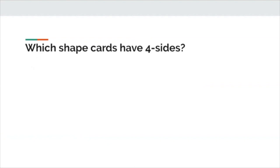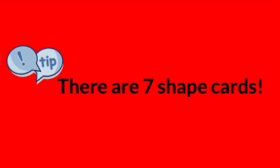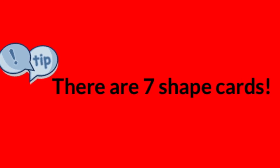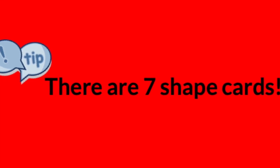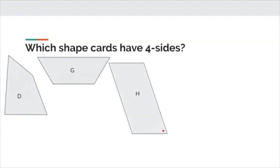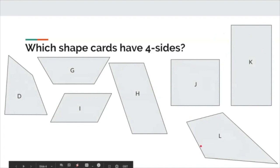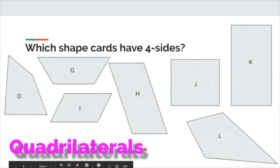Now I want you to take a look at the rest of the shape cards and pull out all the ones that have four sides. Press pause, then press play when you're ready. If you found shapes D, G, J, K, and L, those are all the four-sided shapes. In math we call these four-sided shapes a quadrilateral. Can you say that with me? Quadrilateral.